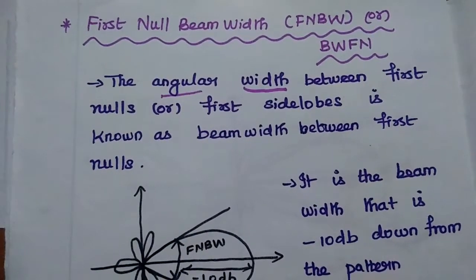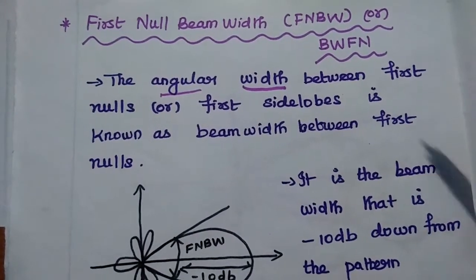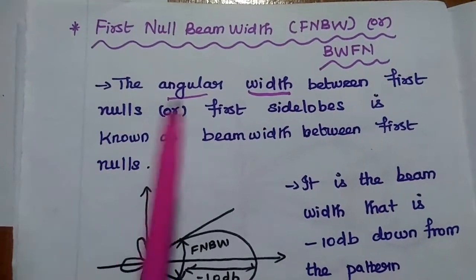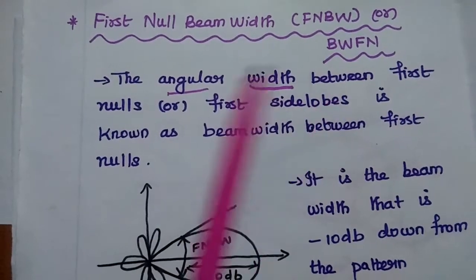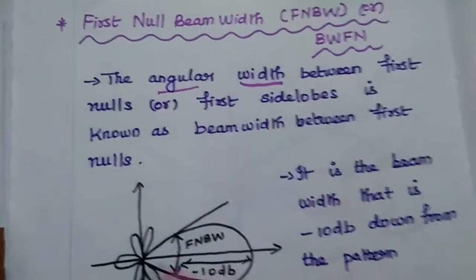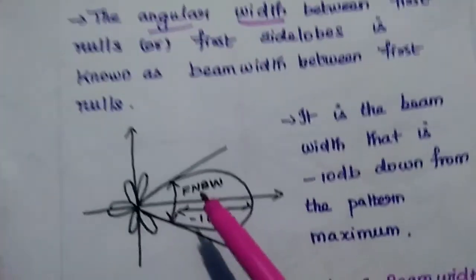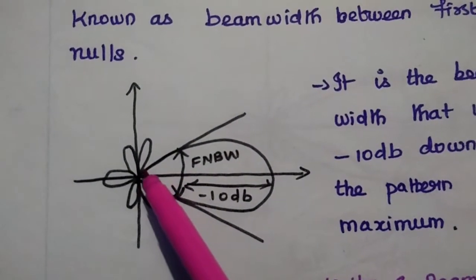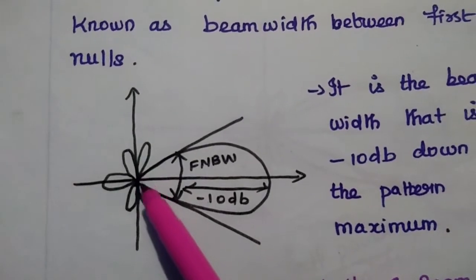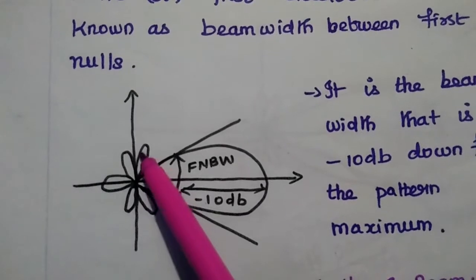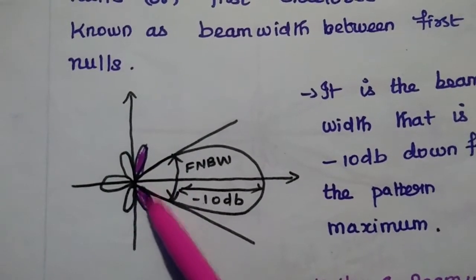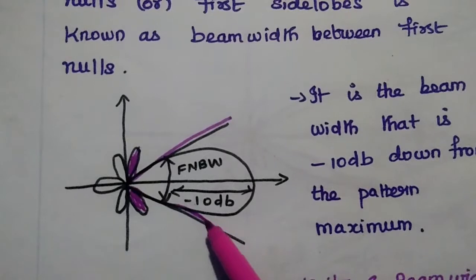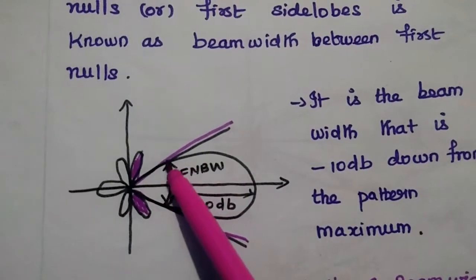Next, we discuss first null beam width, represented as FNBW or BwFn. It is defined as the angular width between first nulls and first side lobes. In the radiation pattern diagram, the first null is where the null value occurs after the main radiation, and the first side lobes are on either side of the major lobe. The angle between these first side lobes is called the beam width between first nulls.